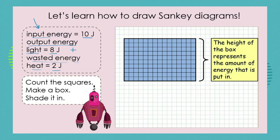We can now look at the extracted information and check, before we start drawing, that it obeys the law of conservation of energy. Remember, input energy of 10 joules must equal useful output of 8 joules plus wasted energy of 2 joules. Once we've checked — yes, 8 plus 2 equals 10 — we know that our values are sound. If we didn't get an equation here, we'd need to look for the lost energy.